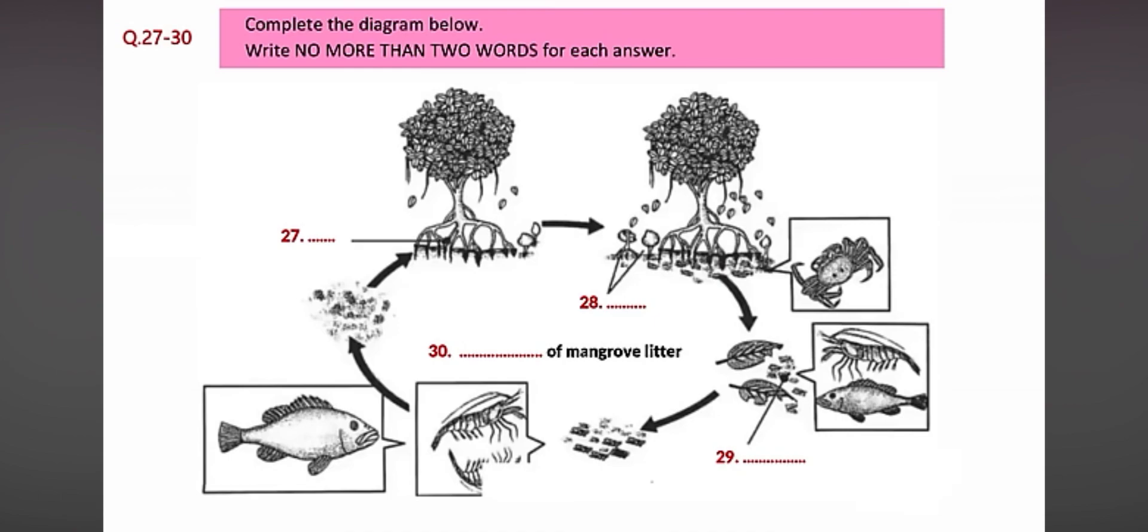Eventually, the remaining organic matter, which is now just very tiny particles, is taken up through the root system, providing nourishment for the mangrove trees. And the cycle begins all over again. Yes, that's exactly it. That's what we'll call it. The nutrient cycle of mangrove litter.